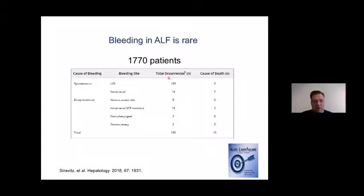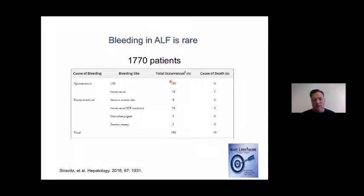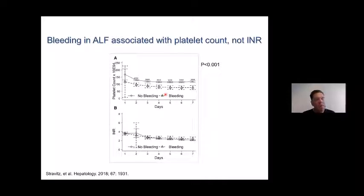The vast majority of bleeds are spontaneous upper gastrointestinal bleeds that usually have relatively little clinical consequences. In this cohort, bleeding was almost never a cause of death and also was almost never associated with invasive procedures — which is something we worry about, of course. Bleeding is rare in ALF, despite the fact that platelets are low and the INR is high and all the other hemostatic changes.